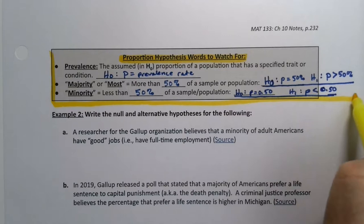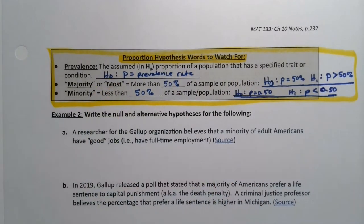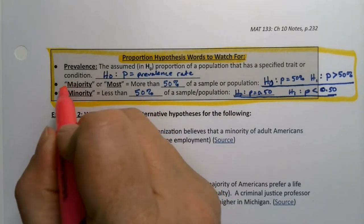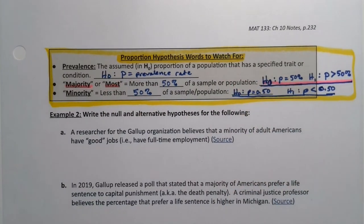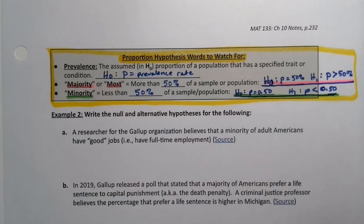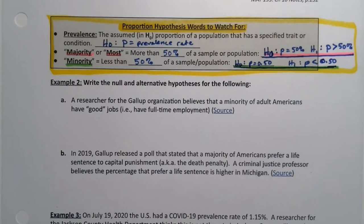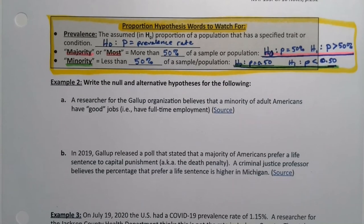So if you see majority or most, that would mean these are your hypotheses. If you see minority, then that would mean these are your hypotheses. And prevalence rate gives you a null hypothesis. It doesn't tell you anything about your alternative, however.